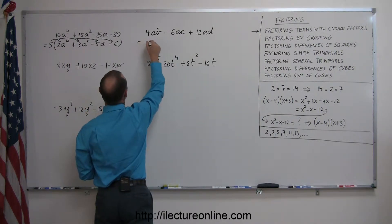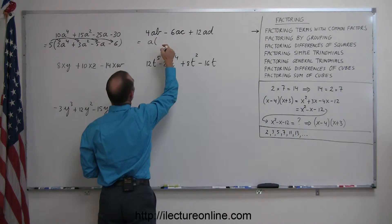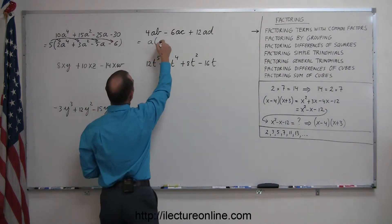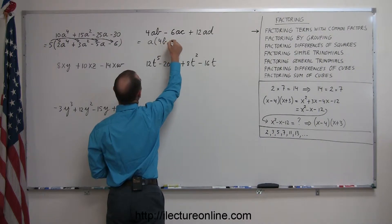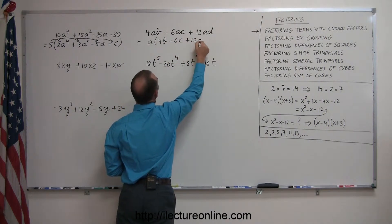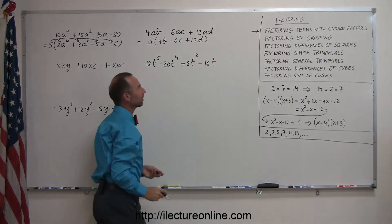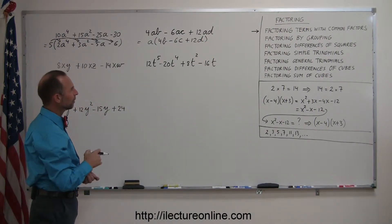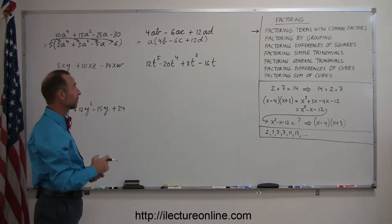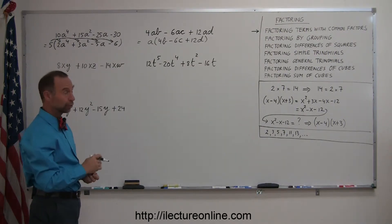So I can write, this is equal to a times, well, what do I have left? Well, I have a 4 times b left minus 6 times c plus 12 times d. So I've already factored out the common factor a. But now I look at those numbers, since they're all even numbers, that means I can divide them by 2. I can probably also factor out a 2.